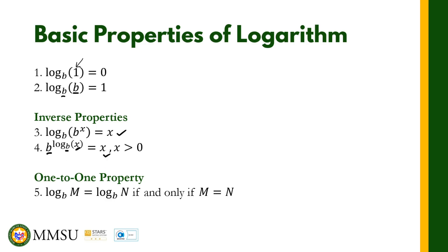We also have the one-to-one property. If we have log_b(M) = log_b(N), then M = N if and only if they are equal. We can equate M and N if they are both logarithmic functions on both sides of the equation with the same bases.